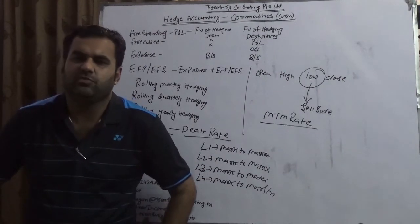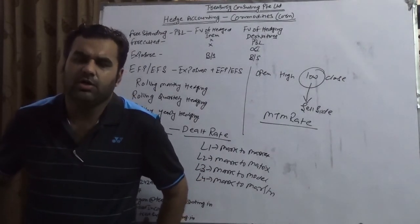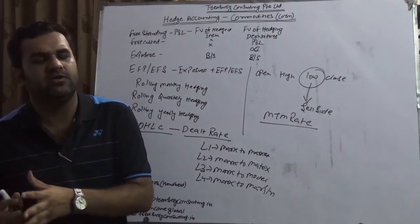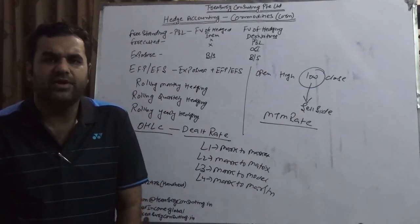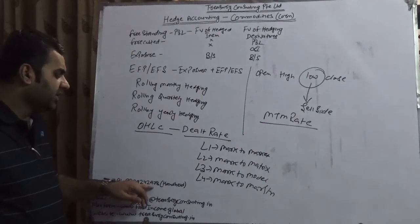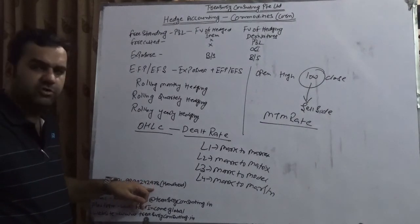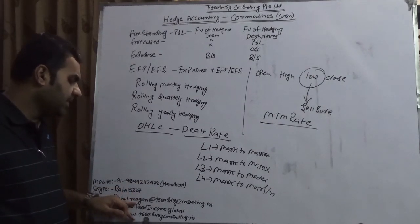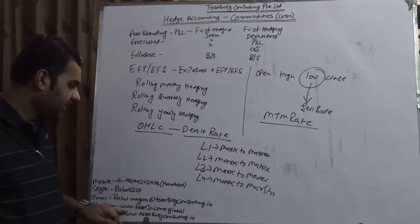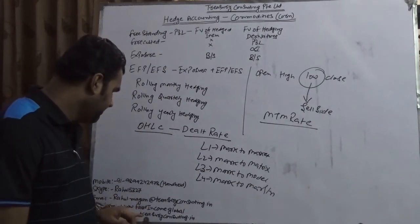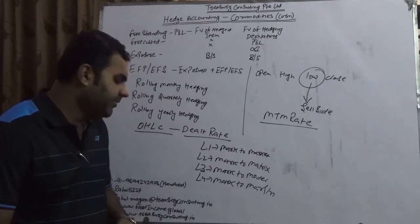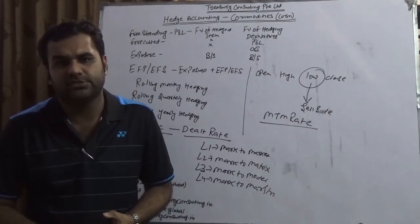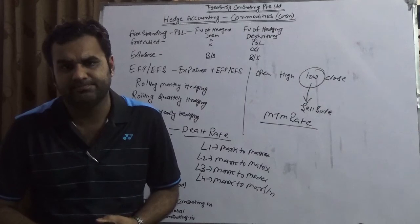In the next video on hedge accounting of corn, we will talk about how to use the dollar offset method and the various precautions to take. For any questions, you can contact us at 98-double-1-24-2978, Skype: raoul5327, email: raoul.magan@treasuryconsulting.in, website: www.fixedincome.global or www.treasuryconsulting.in. There are multiple videos on the way — see you soon, thank you.